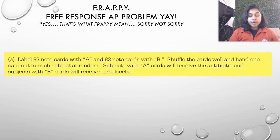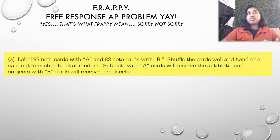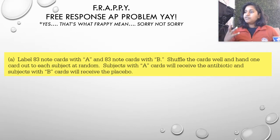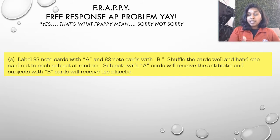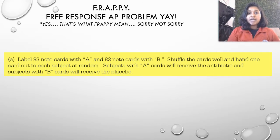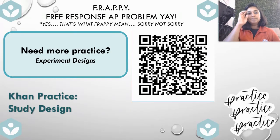There are a lot of different ways you could have randomized this. You could have used a random number generator, popsicle sticks, or table D with random numbers. There are a hundred different ways you could have set this up. But as long as you recognize that they don't know which treatment they're getting and we don't know who's getting a treatment or why — just make sure it's fully randomized. Reset and relook at that part of the chapter if you need more definitions.